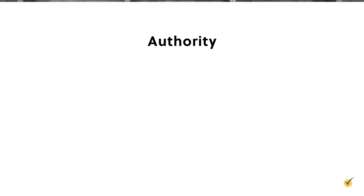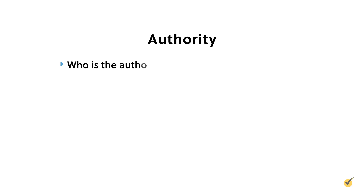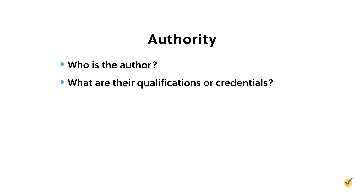Next is authority. The authority of a source is about the credibility of the author or organization that produced it. An authoritative source is one created by a recognized expert in the field you're writing about. Say you're writing about how to be a good basketball player — it would make sense to cite LeBron James, since he's regarded as one of the best basketball players of all time. It wouldn't make sense to cite someone with no relevant expertise. To assess authority, consider who the author is, what their qualifications or credentials are, and whether they're respected in their field.